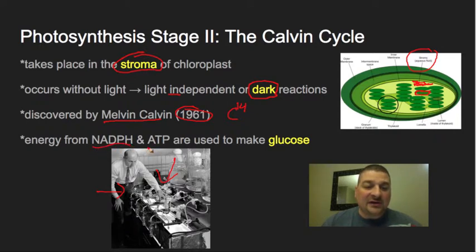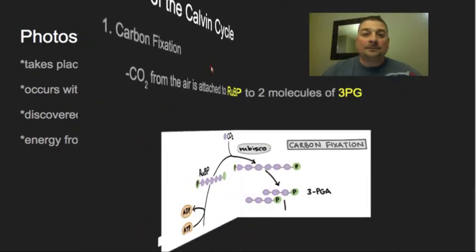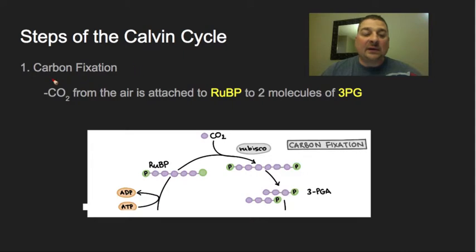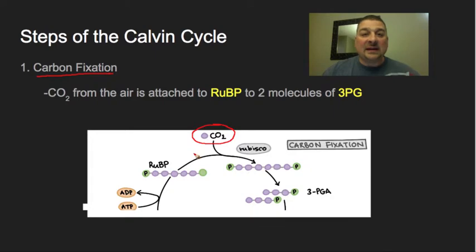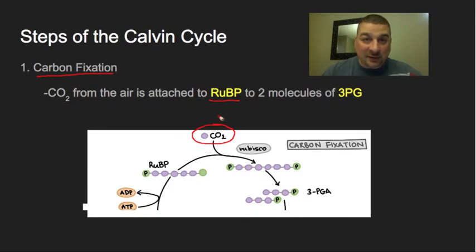In this final step, the high-energy electrons in NADPH and the energy in ATP are used to make our final energy product: glucose. The first step of the Calvin cycle is called carbon fixation. The carbon used to build glucose comes from the air as CO2. Carbon dioxide enters through the stoma — the holes in the leaf — into the cells and into the chloroplast.